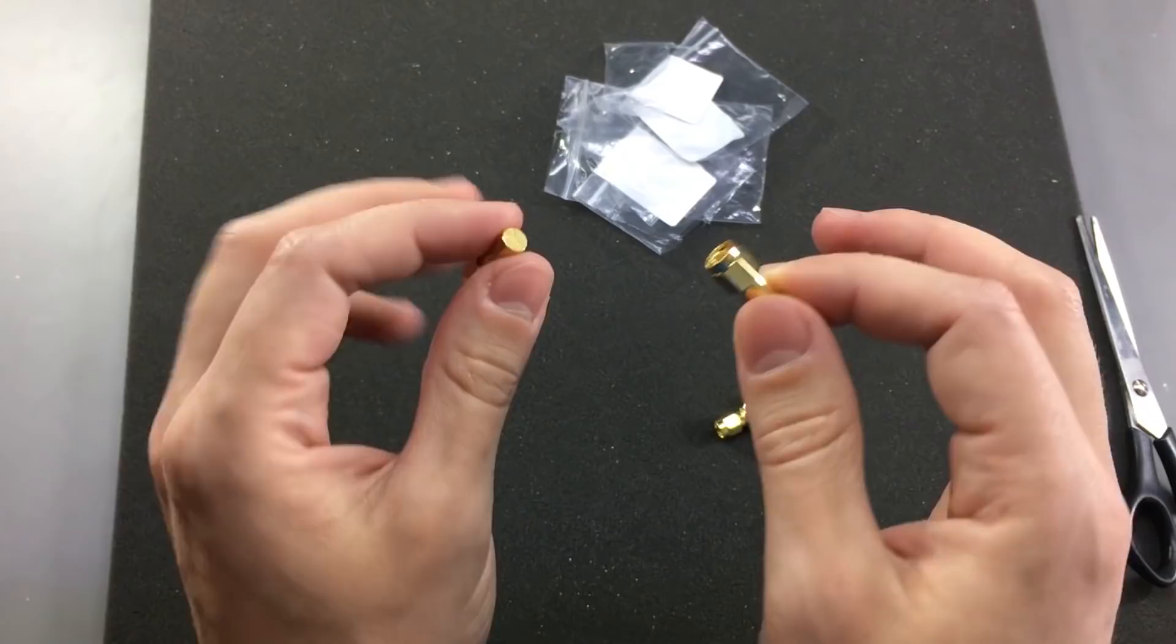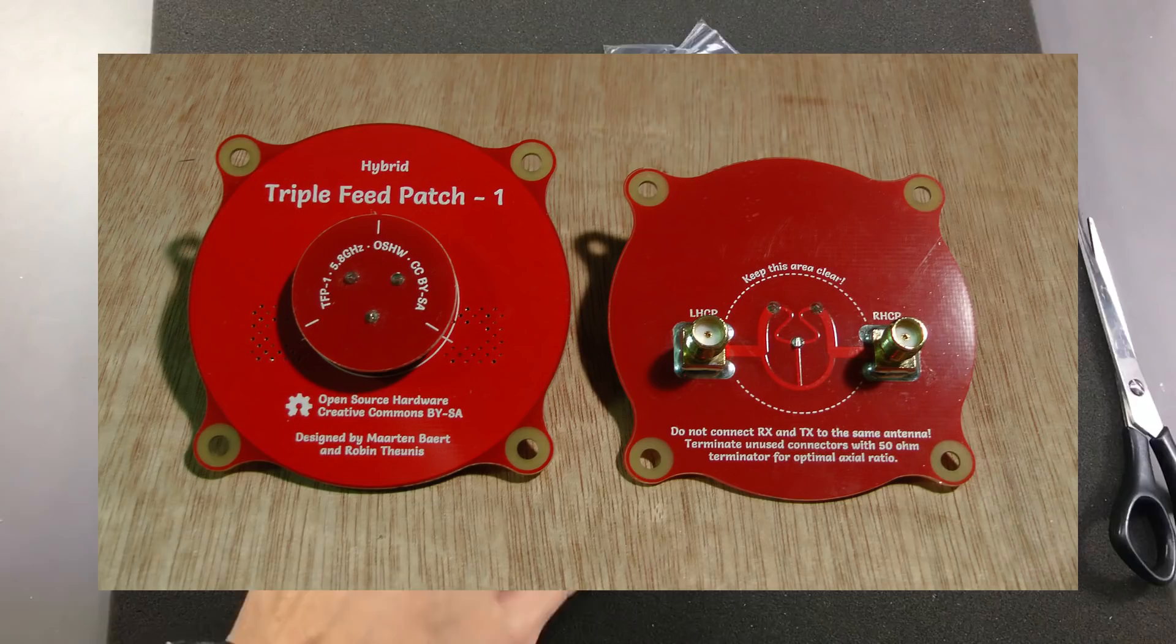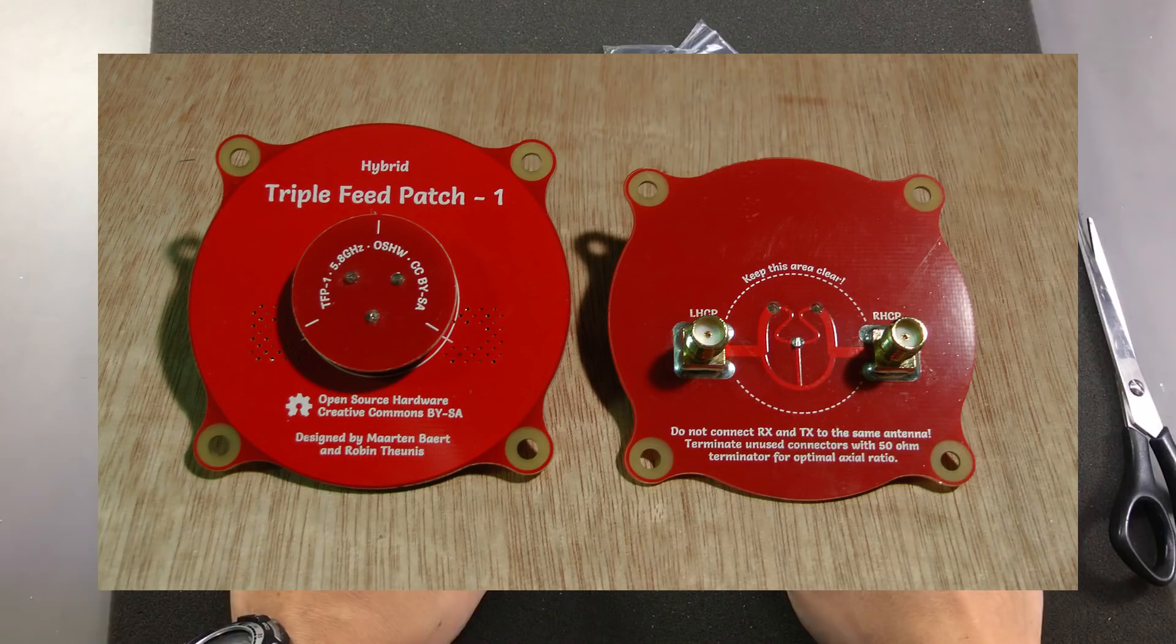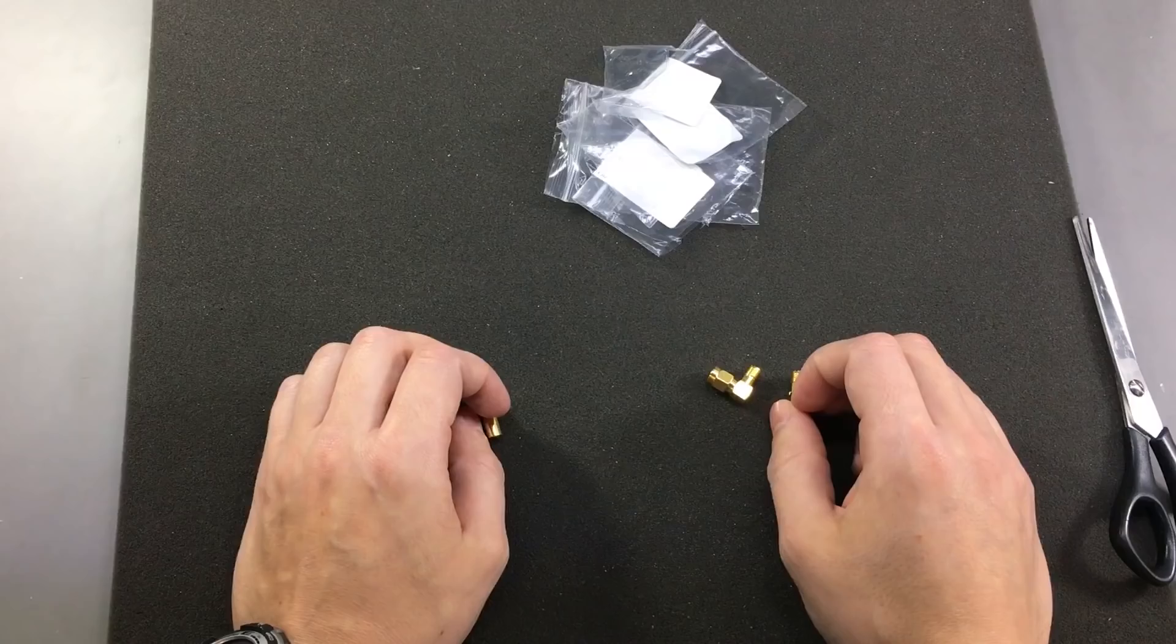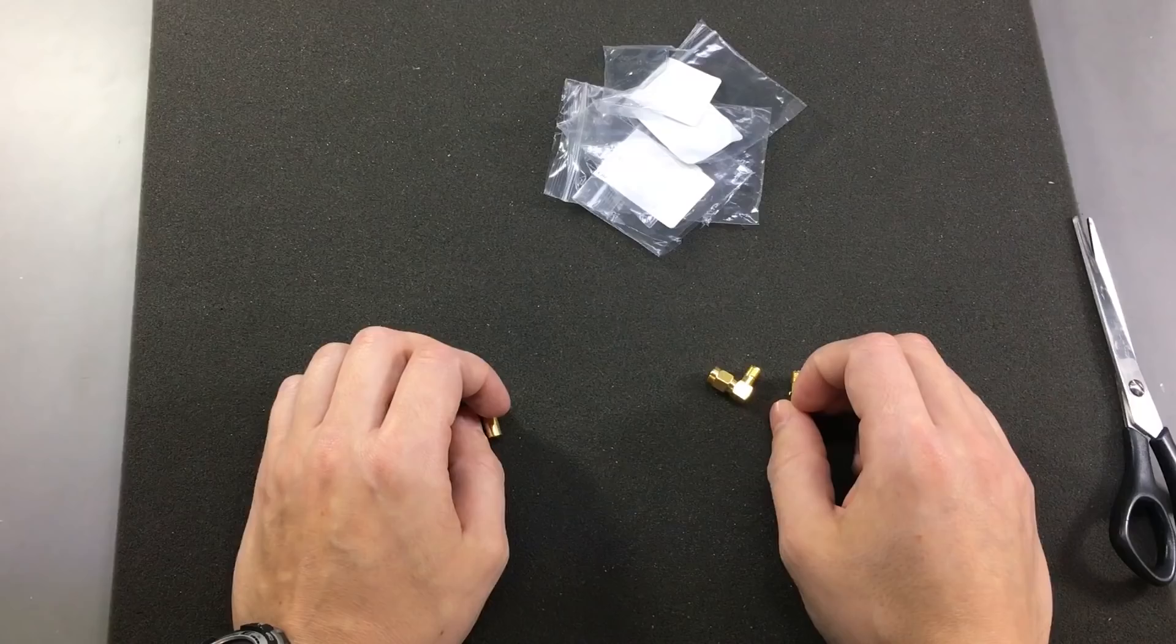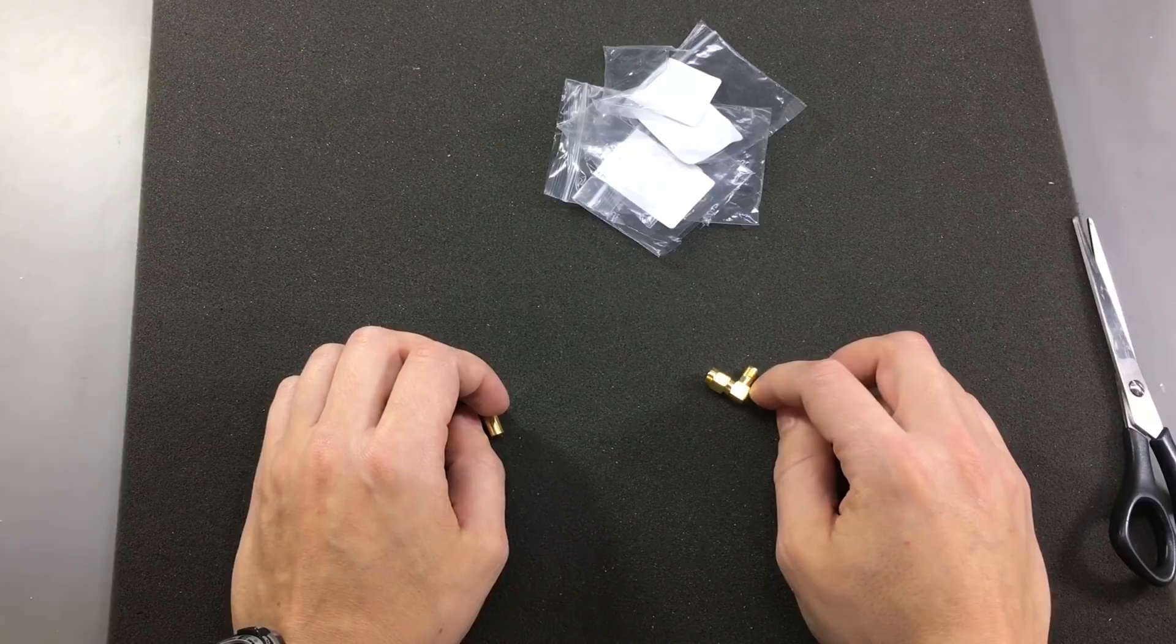I need these to terminate one of the inputs to a triple feed pagoda patch antenna and I'll show you an image on screen right now. These types of antenna by design they have two inputs, one on the left side and one on the right, thus giving you the option to choose the polarization of the antenna. However, it is best to terminate the unused input to get the best performance. So I plan to use one of those antennas in my FPV setup, hence the need for a 50 ohm termination.